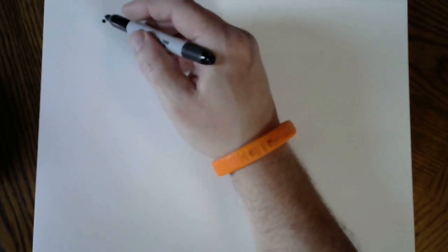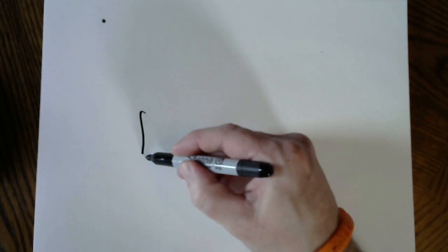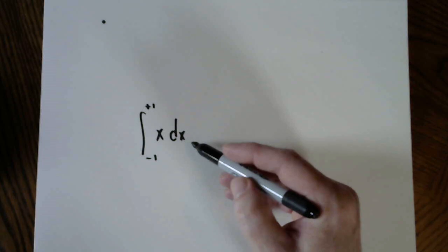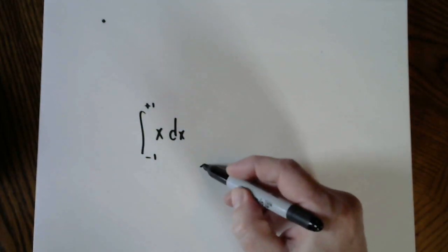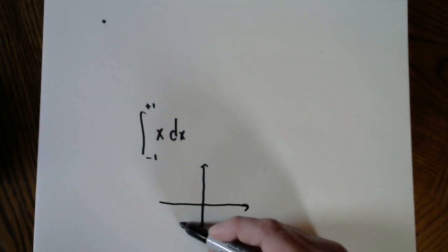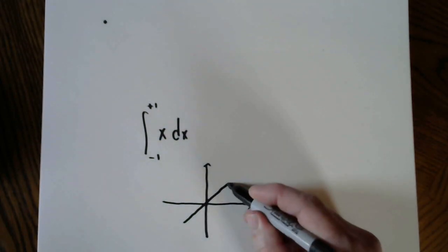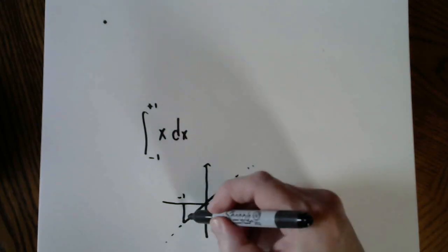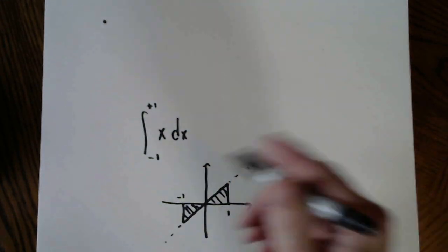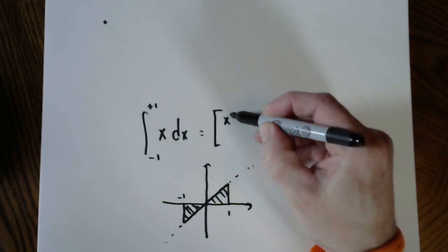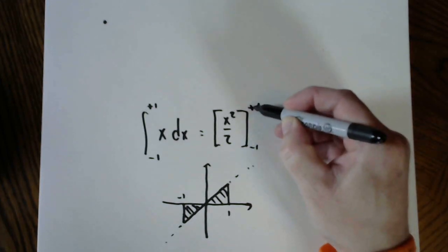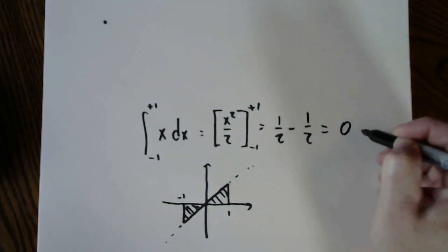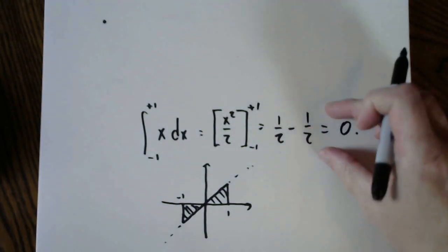Let's do a little exercise to make a point. Look at this very simple linear function — simple as it gets. When I evaluate this definite integral, I should get the area under that simple linear function. Taking the antiderivative: add 1, divide. Plugging in 1 gives one half; plugging in negative 1 gives one half; subtracting gives 0.